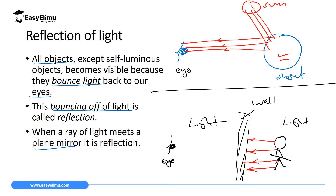Since light cannot travel around corners, the person behind the wall cannot receive those rays of light. If light could have made the corners, it would come to the wall, climb up, and come back into our eyes — but since light cannot do that, for us to see an object, light must be traveling in a straight line directly from the object to our eyes. If light has not reached our eyes, we cannot see the object. We only see objects when light from them reaches our eyes.